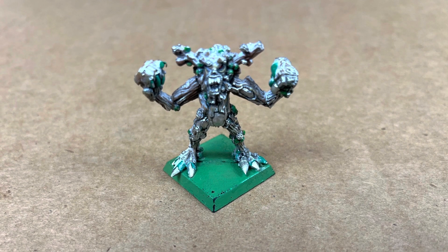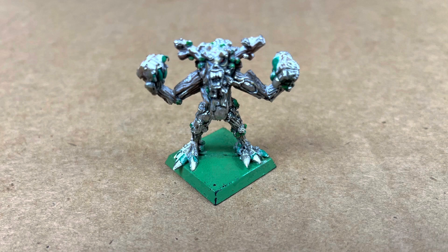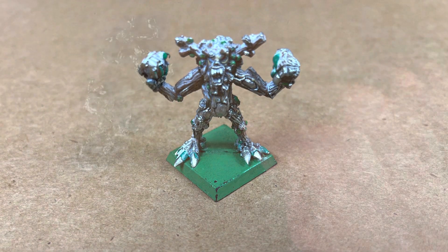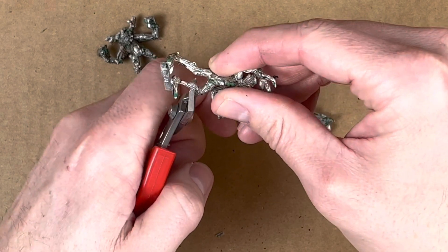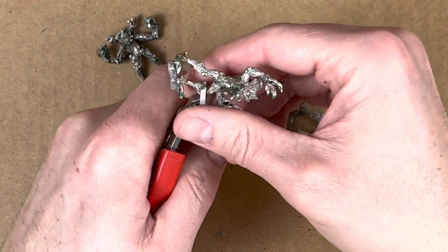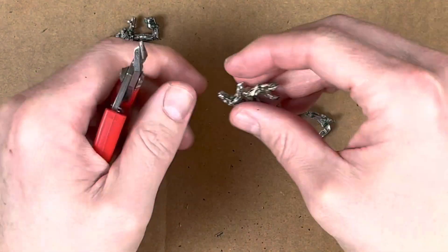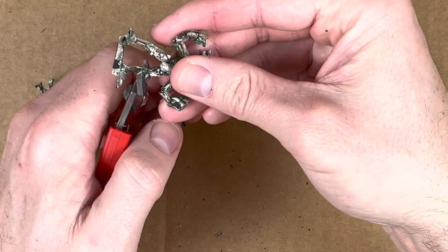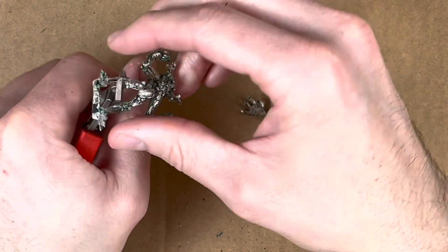So I went about trying to convert these and beefing them up a bit so that they could actually serve as tree kin. The very first thing that I'm wanting to do is make them taller. So I'm going to beef out these models by increasing the height and then increasing the mass by adding various branches that are coming out of their shoulders, their back, their sides, etc.